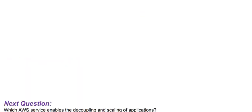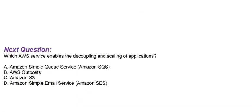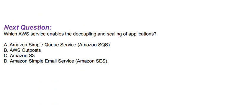The next question is: Which AWS service enables the decoupling and scaling of applications? Option A: Amazon Simple Queue Service. Option B: AWS Outposts. Option C: Amazon S3. Option D: Amazon Simple Email Service.